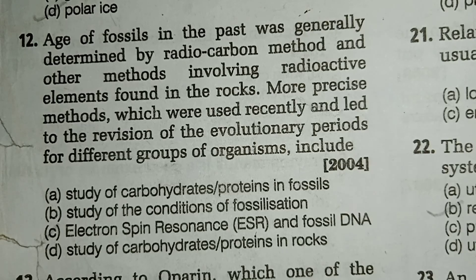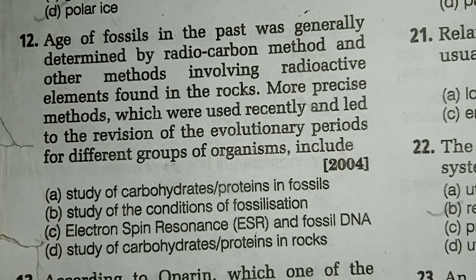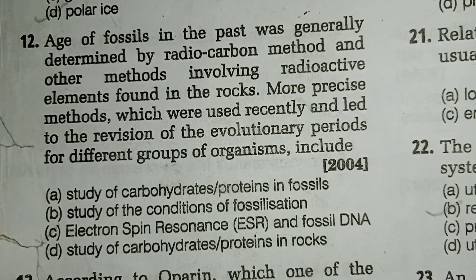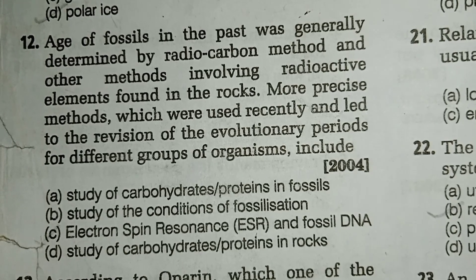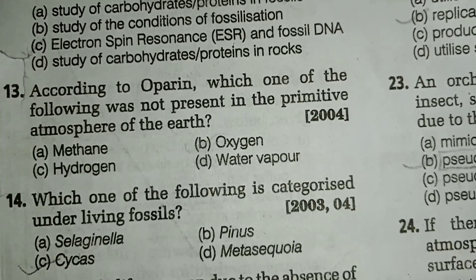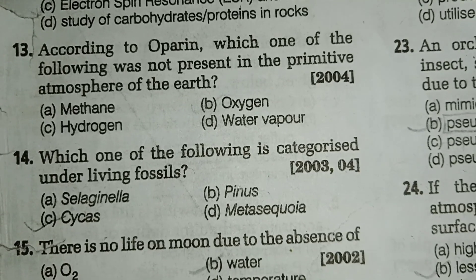Electron spin resonance measures the number of charges occupying deep traps in a crystal band gap. The basic principle of ESR is the same as luminescence — electrons become trapped and destroyed as a result of ionizing radiation. An example is the dating of tooth enamel.